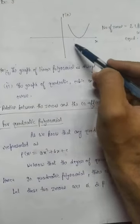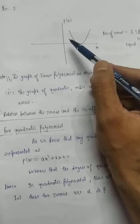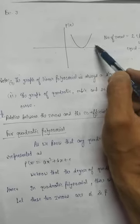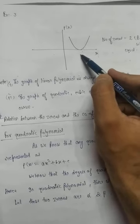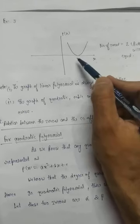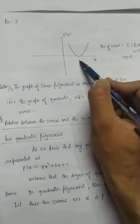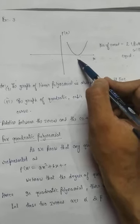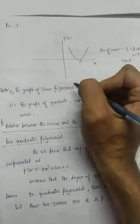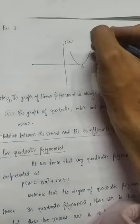Next example, example number three: p(x) equals something and the graph of p(x) is given. You can see the graph touches the x-axis at one point. The answer will be two, because it is touching at only one point and whenever a graph touches any axis there will always be two zeros, and the nature of both zeros will be equal. Suppose that point is 3, so you will get two zeros both equal to 3.